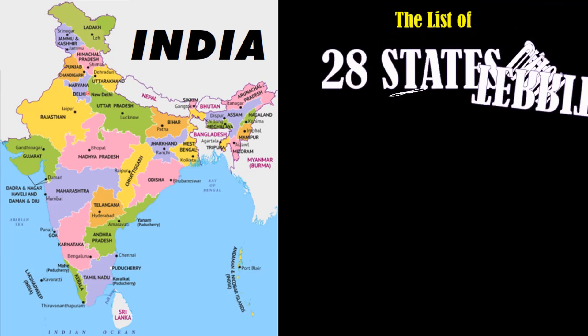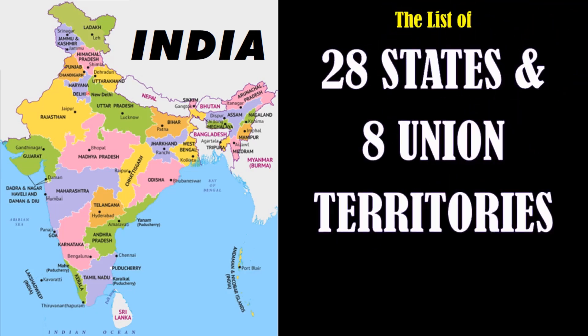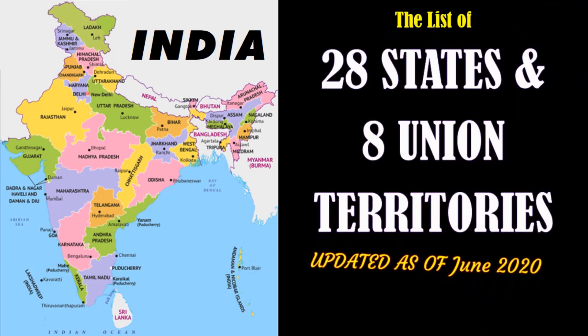Hi friends, welcome to Natpudan Sasha. Today in this video, we are going to see the list of 28 states and 8 union territories of India.